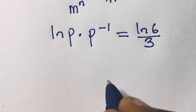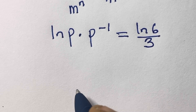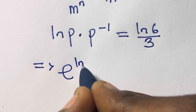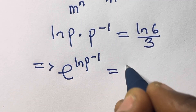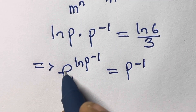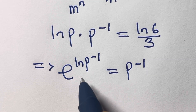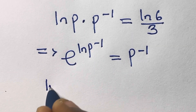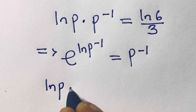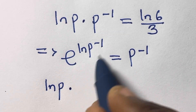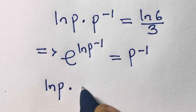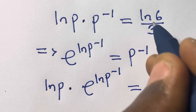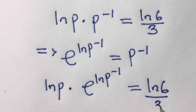Now, p^(-1) can be written as the exponential of minus ln(p), because e^(-ln(p)) equals p^(-1). So we now have ln(p) multiplied by exponential of minus ln(p) equals ln(6) divided by 3.